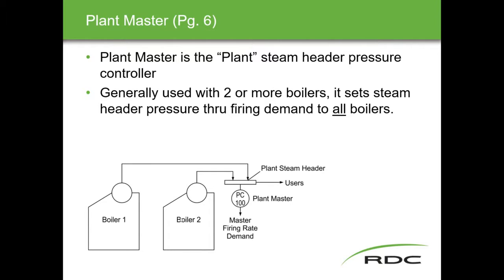There are a few ways to control multiple boilers — you can send an equal signal to both, have one as the main boiler with another coming on for increased demand, or different combinations. The first strategy uses something called a plant master. The plant master is the plant steam header pressure controller. The output from any number of boilers comes to a plant steam header, and the plant master measures the collective steam produced by all the boilers — not any particular one.